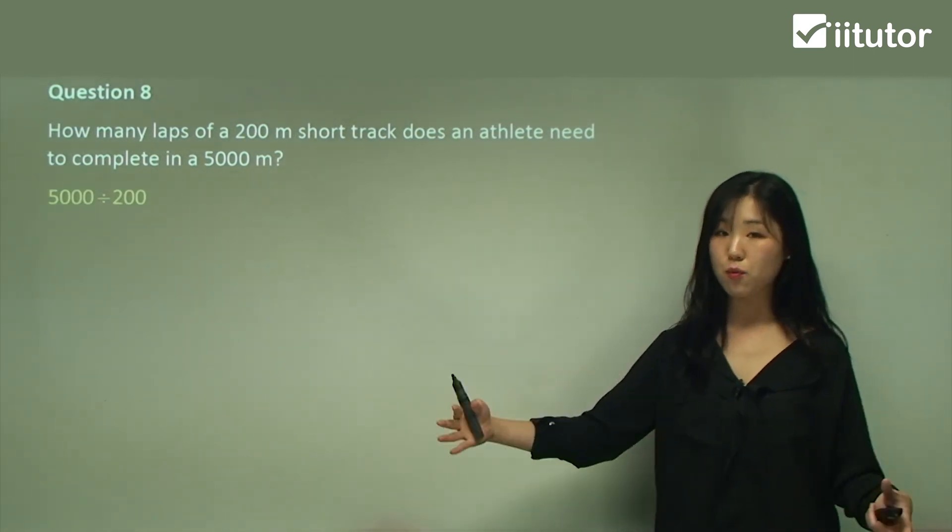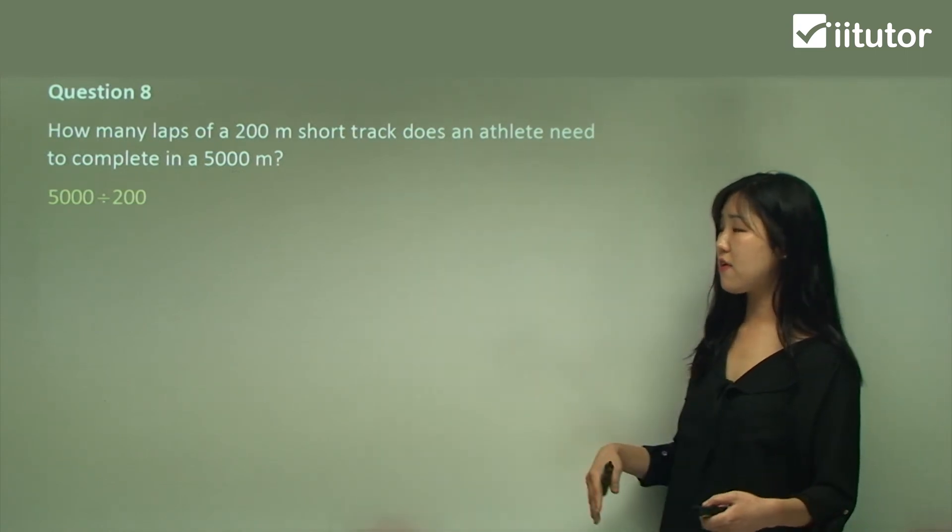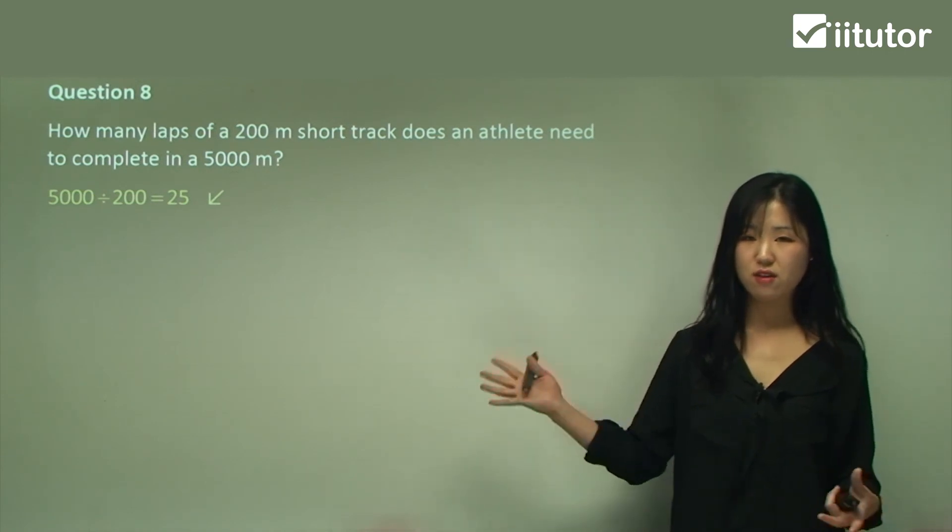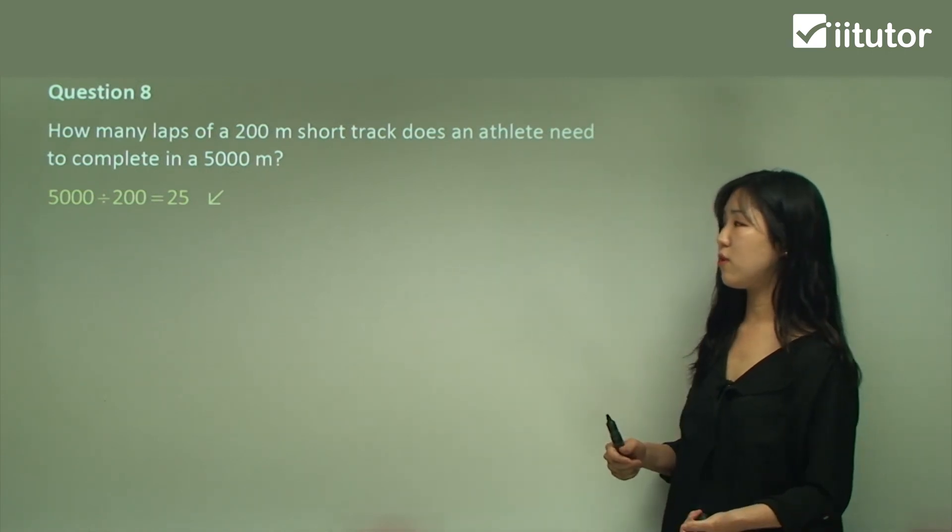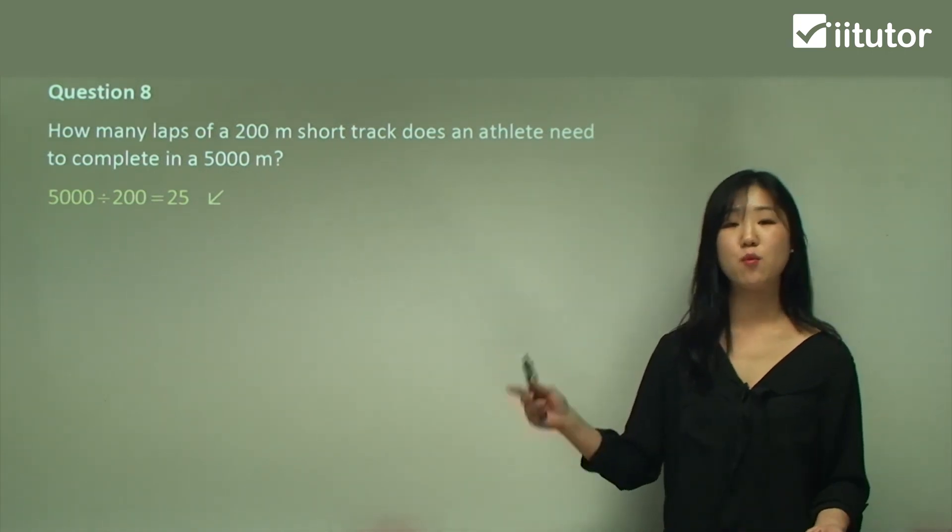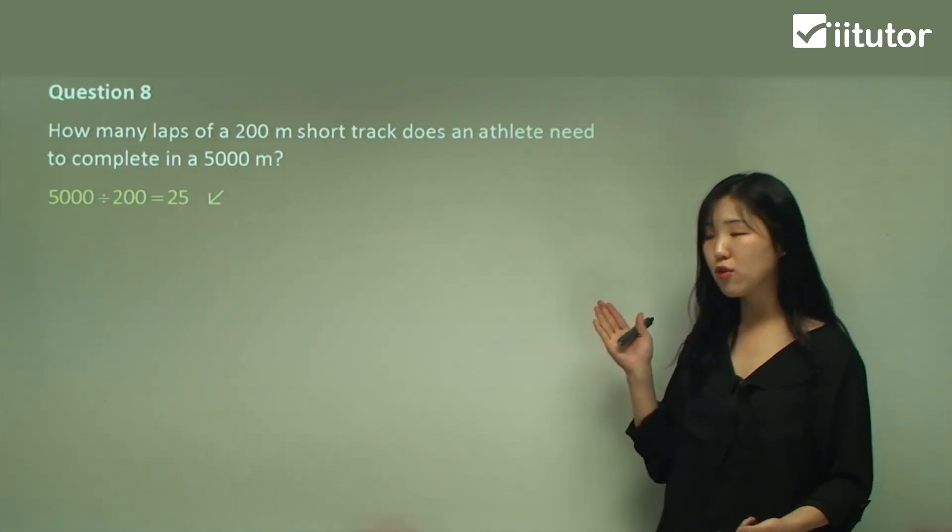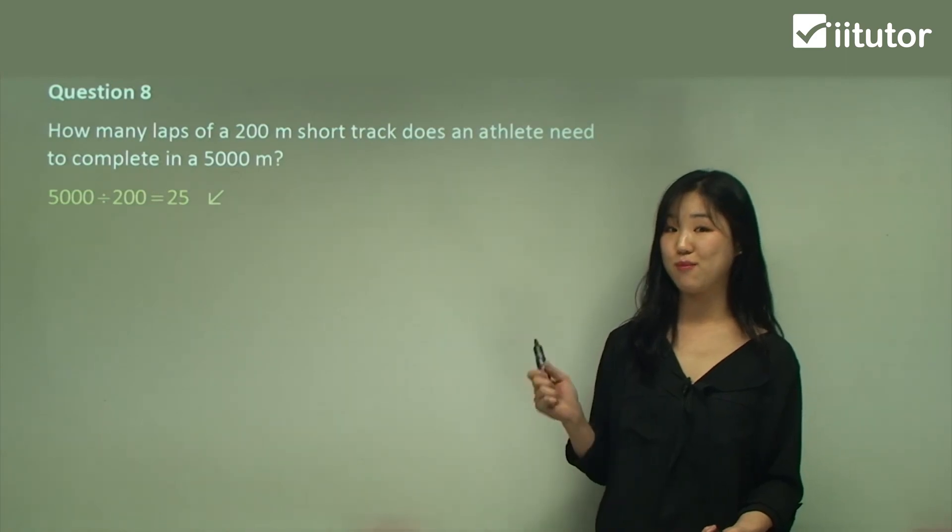So we just find the quotient by dividing and you should get 25. I'll leave the calculation for you to do. So the answer is 25. There's 25 laps within that 5000 meters. Okay guys, so these are the kind of stuff. Make sure you're very familiar with the words I've introduced at the very beginning.